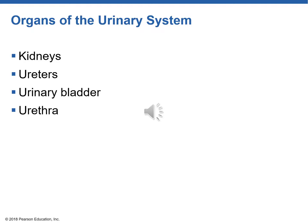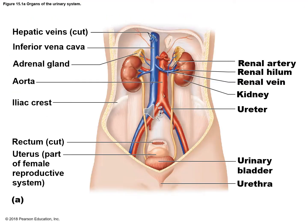The urinary system is composed of two kidneys, two ureters, one urinary bladder, and one urethra. Here we see the two kidneys. They are retroperitoneal, so they're behind the peritoneum. We notice that the right kidney is a little lower than the left because it's getting crowded by the liver. Each kidney has an adrenal gland on top of it, which is part of the endocrine system. There are also two ureters — the yellow tracts coming down — delivering urine to the bladder where it's stored until it is excreted out of the body by the urethra.